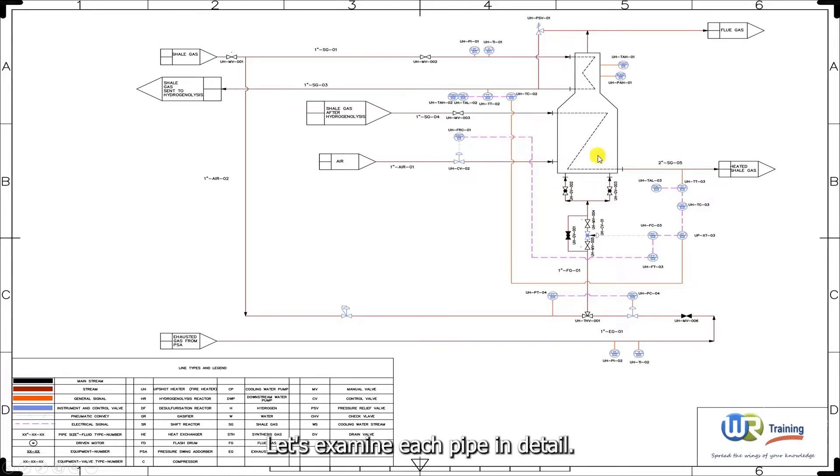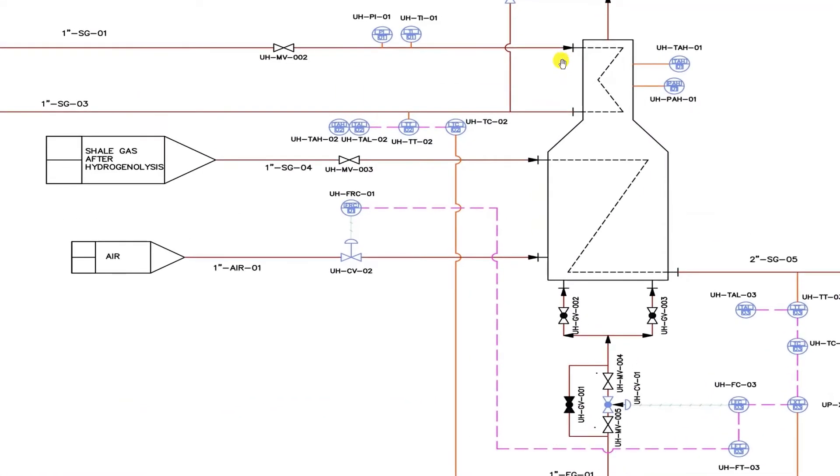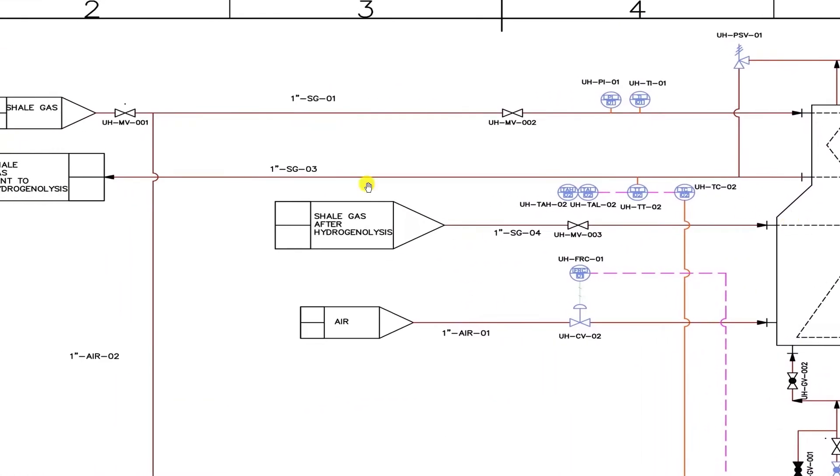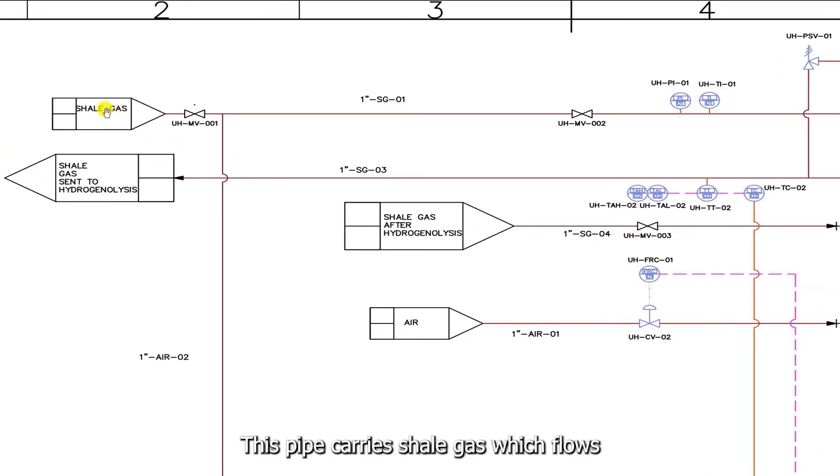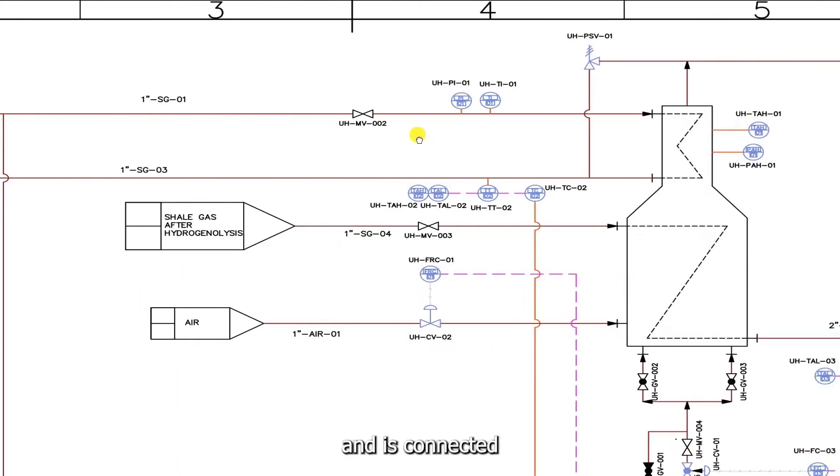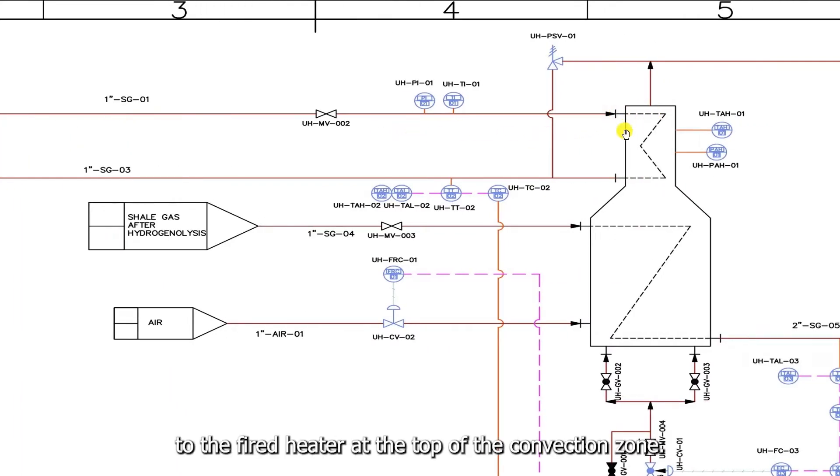Let's examine each pipe in detail. We begin with the shale gas pipe at the top of the diagram. This pipe carries shale gas which flows through two manual gate valves and is connected to the fired heater at the top of the convection zone. The flow path of the gas inside the furnace is depicted here.